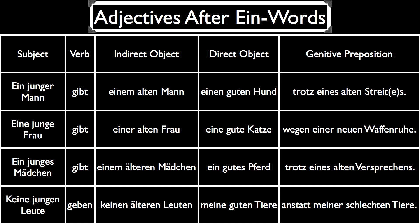Now let's try some examples using adjectives after ein words. Our first example again uses only masculine nouns: Ein junger Mann gibt einem alten Mann einen guten Hund trotz eines alten Streites — A young man gives an old man a good dog in spite of an old argument. Notice that as with the der word endings, the only one that takes something other than EN is the masculine nominative. It takes an ER when preceded by an ein word but it takes an E when preceded by a der word. Our second example uses only feminine nouns: Eine junge Frau gibt einer alten Frau eine gute Katze wegen einer neuen Waffenruhe — A young woman gives an old woman a good cat because of the new truce. The endings for the adjectives here are the same as for der words — two cases take E and two take EN. The nominative and accusative forms take E after both ein words and der words, and the dative and genitive both take EN for the feminine.